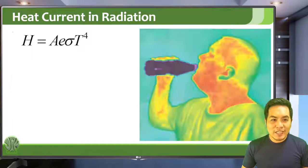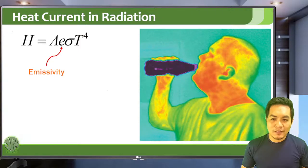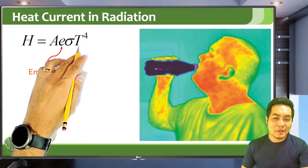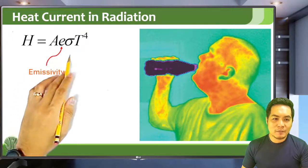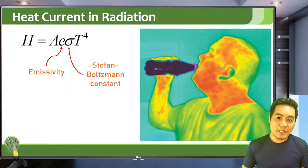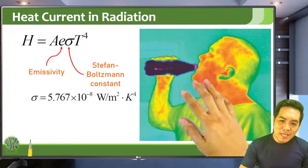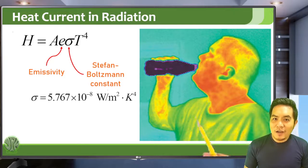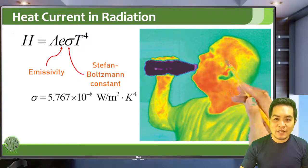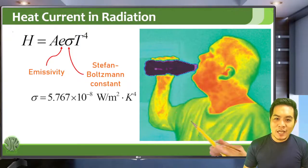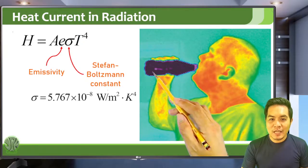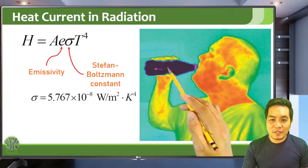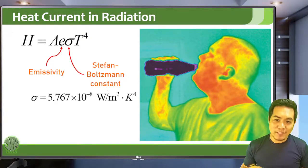In radiation, the heat current depends on a quantity called emissivity and on temperature raised to the power of 4. The formula also involves sigma, the Stefan-Boltzmann constant. This is demonstrated by a thermal infrared image of a man — you can see heat coming from his head and hands, while the very cold soda or liquid he is drinking appears dark. In a thermal IR image, cold objects appear dark and hot objects appear bright.